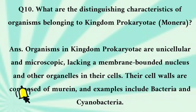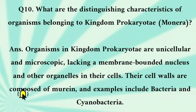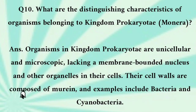What are the distinguishing characteristics of organisms belonging to kingdom Prokaryotae (Monera)? Organisms in kingdom Prokaryotae are unicellular and microscopic, lacking a membrane-bounded nucleus and other organelles in their cells. Their cell walls are composed of murein, and examples include bacteria and cyanobacteria.